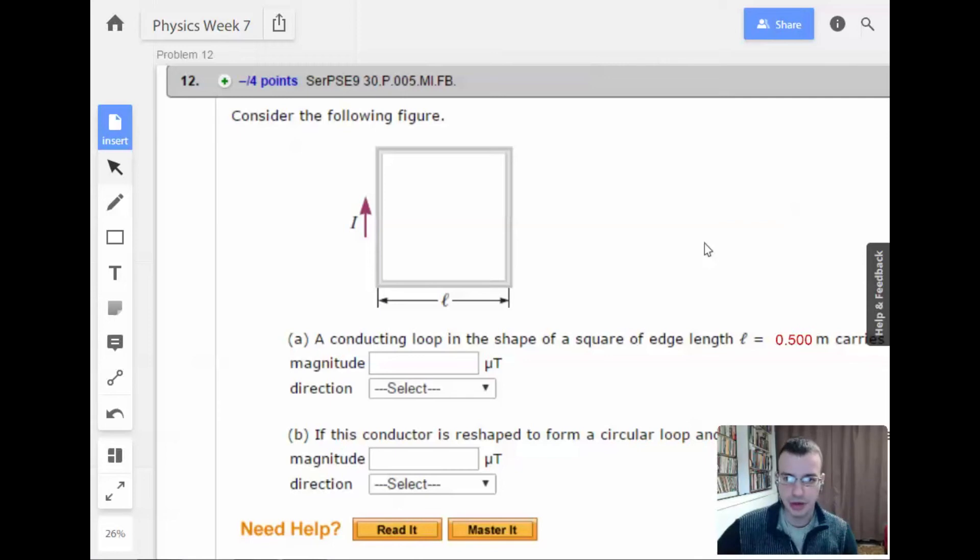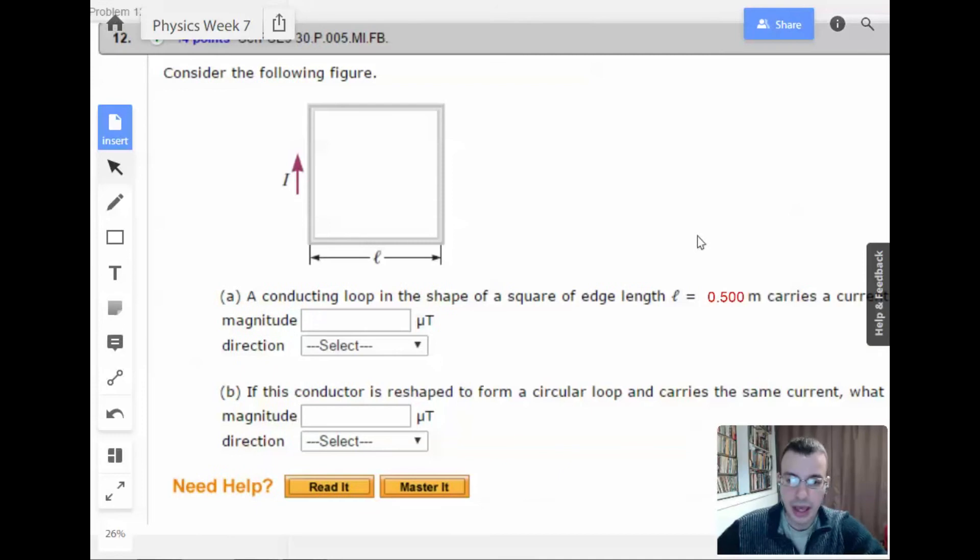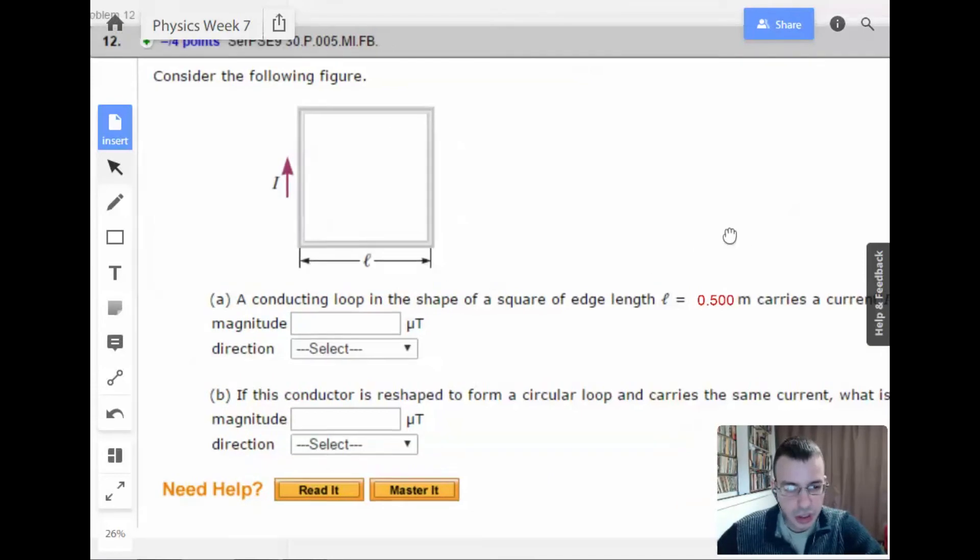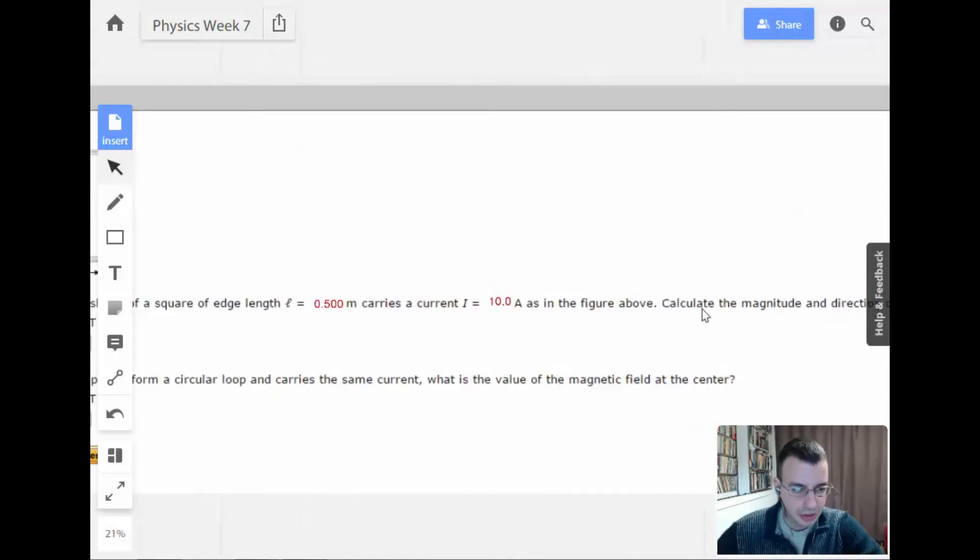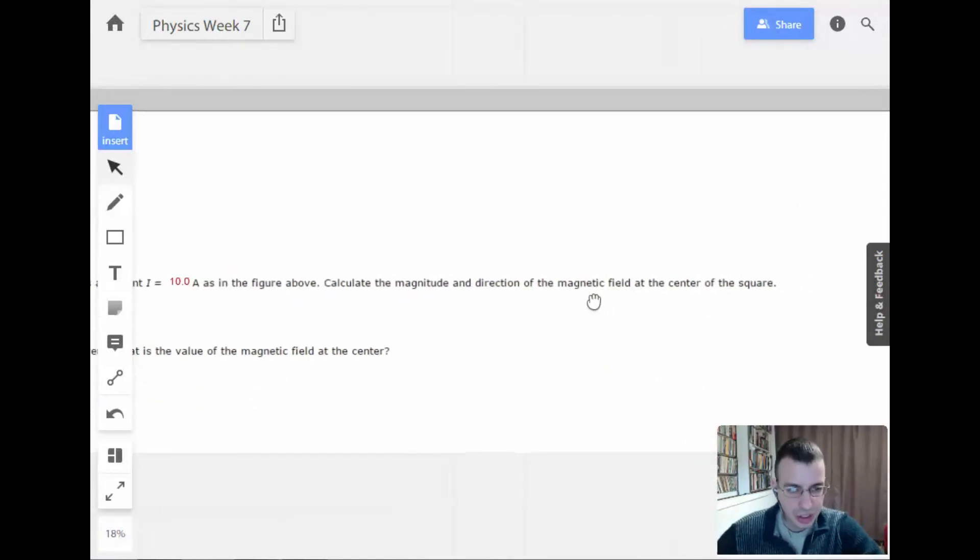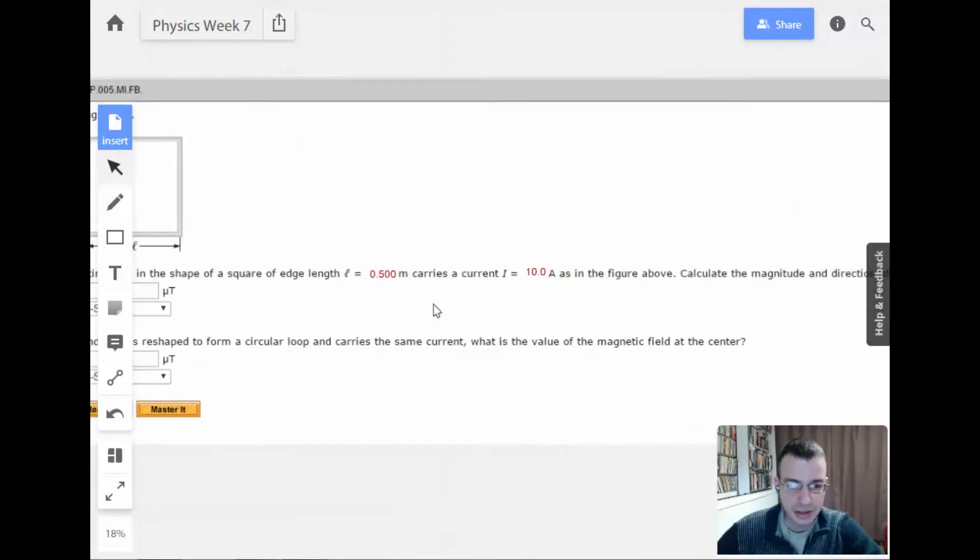Week 7, problem 12. Consider the following figure. A conducting loop in the shape of a square of edge length 0.5 meters carries a current of 10 amps, as in the figure above. Calculate the magnitude and direction of the magnetic field at the center of the square.